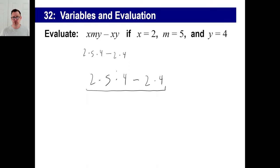You've got to multiply first. So it looks like you need to do this first and this, and then you subtract. So 2 times 5 is 10, times 4 is 40, minus, and then 2 times 4 is 8, and that'll be 32. There you go. All right.